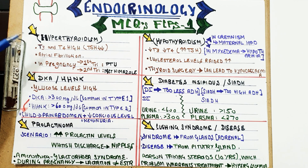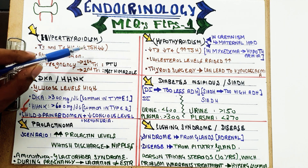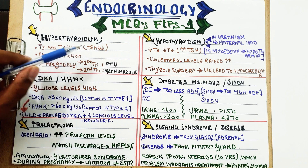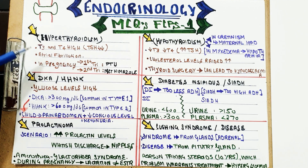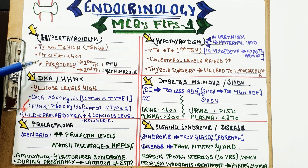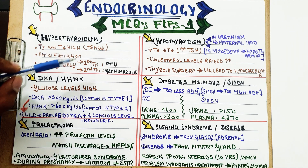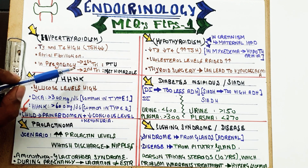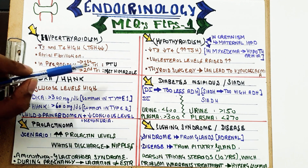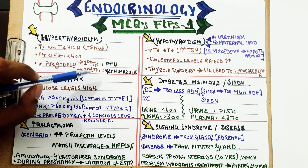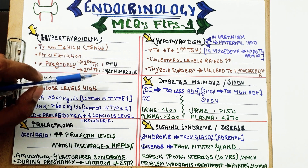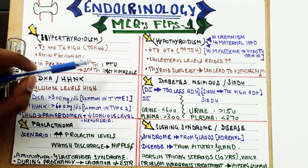In hyperthyroidism, the T3 and T4 levels will be high but TSH levels will be low due to the negative feedback effect. A history of atrial fibrillation can be given in hyperthyroidism, as it precipitates cardiac pathology. In pregnancy, PTU is given in the first trimester and methimazole from the second and third trimester onwards. Remember that both of these drugs block the peroxidase enzyme.